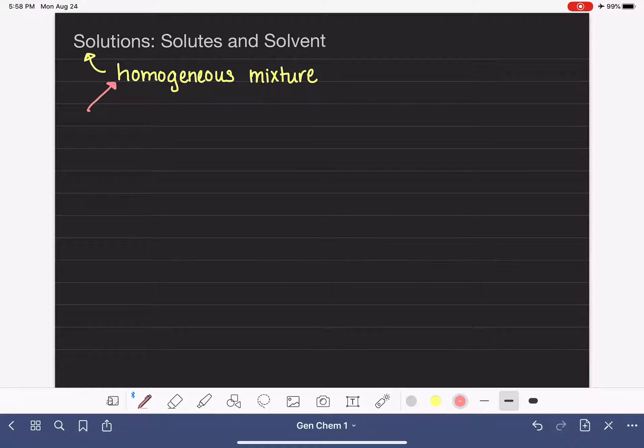Homogeneous is a word that we use to describe a mixture that has a uniform appearance. When we say that something has a uniform appearance, this just simply means that all of the components of the mixture look exactly the same. So when we look at that mixture, we cannot distinguish the components from each other.